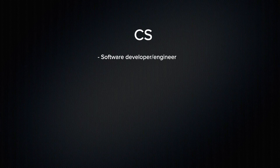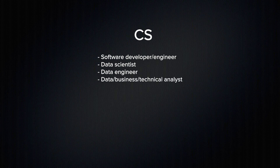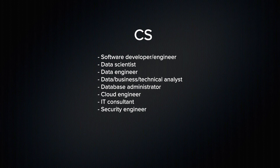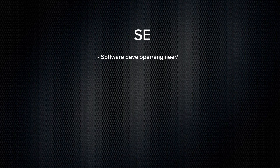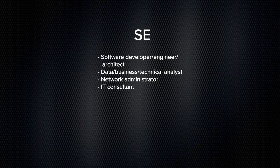For CS, you can be a software developer or engineer, data scientist, data engineer, data business or technical analyst, database administrator, cloud engineer, IT consultant, security engineer, and project manager. For Software Engineering, you could become a software developer, engineer, architect, a data business or technical analyst, a network administrator, IT consultant, or project manager.